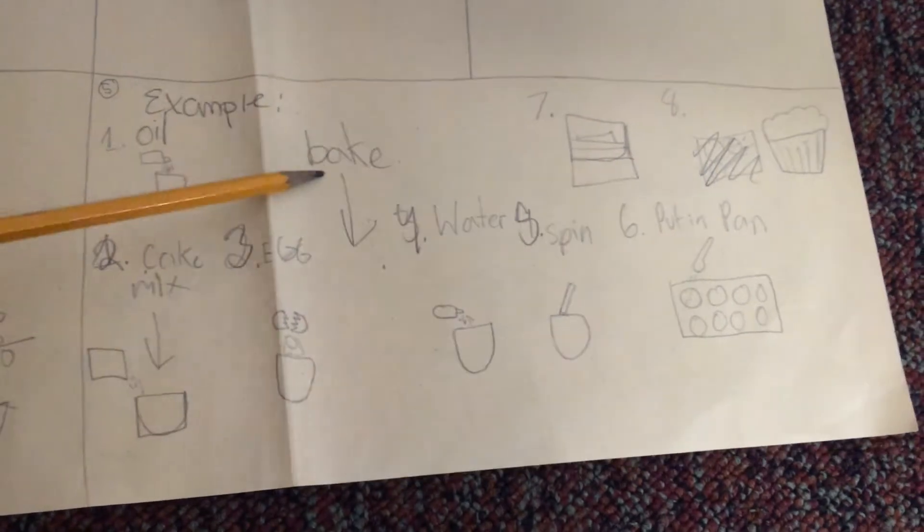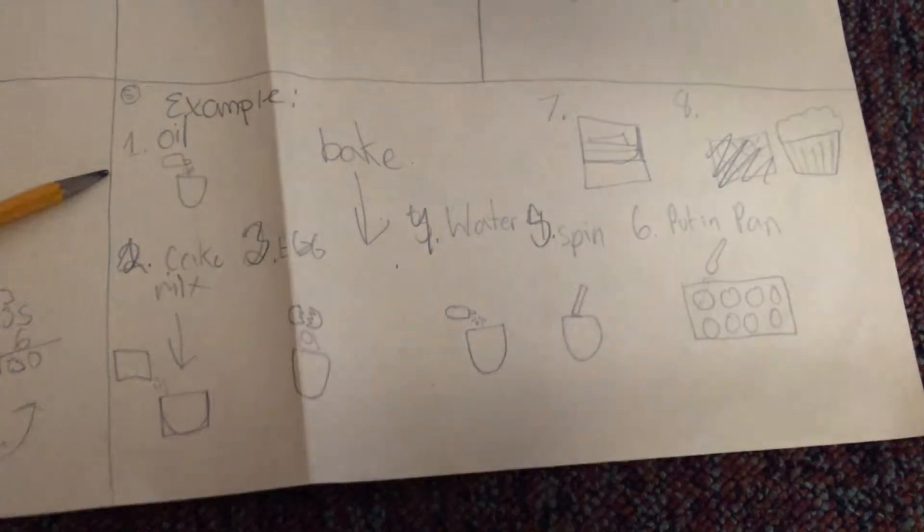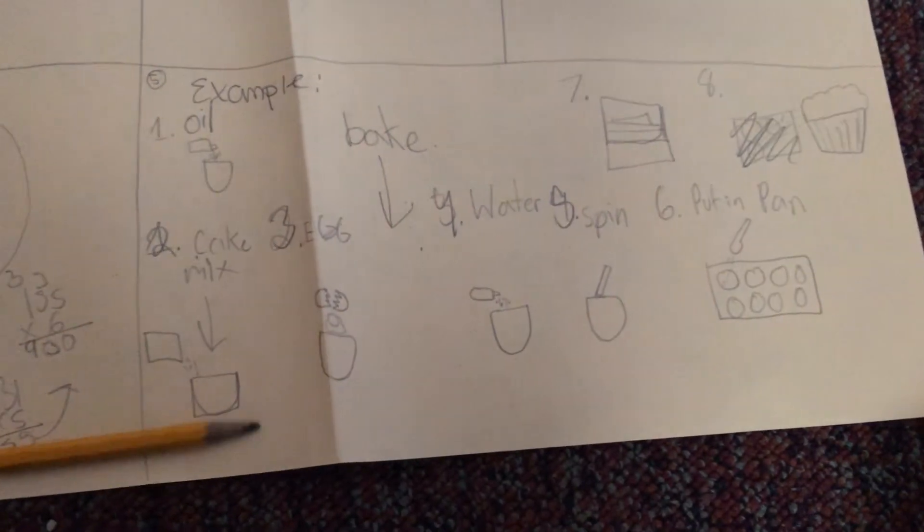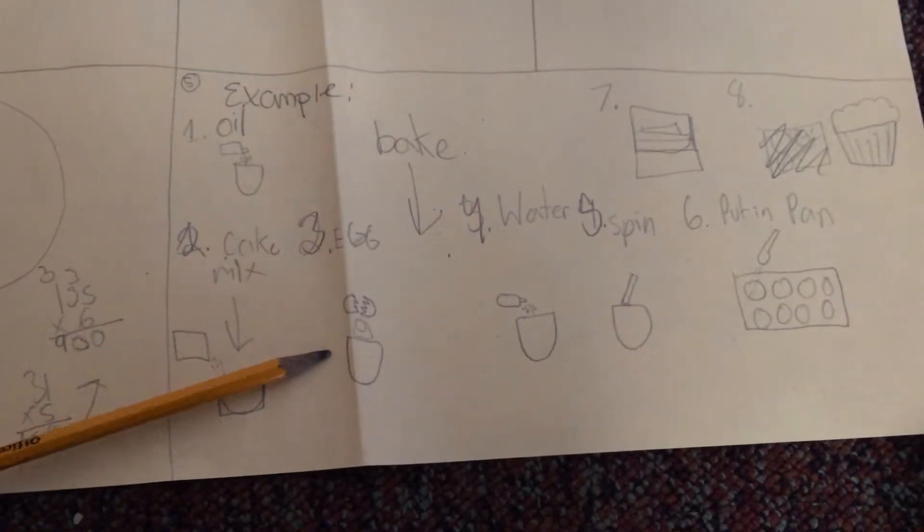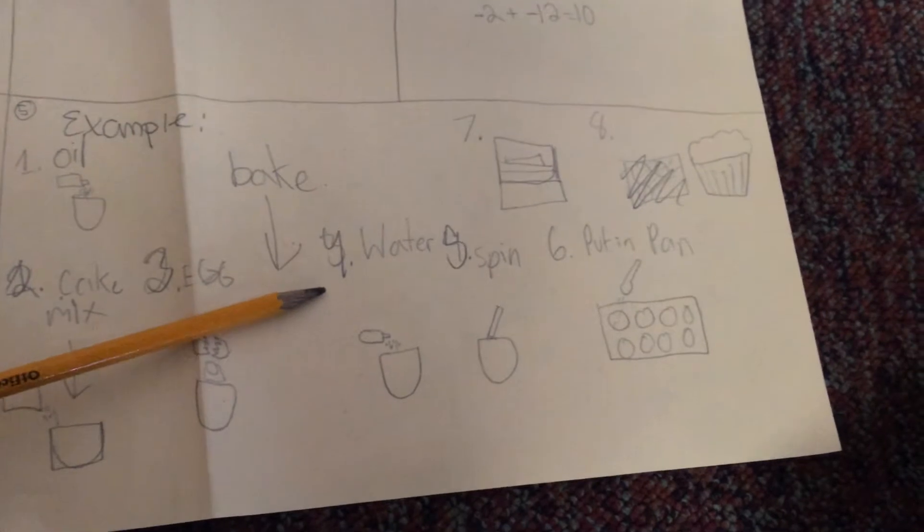Example. Bake. Number one, oil. Number two, the cake mix. Number three, the eggs. Number four, the water. Five.